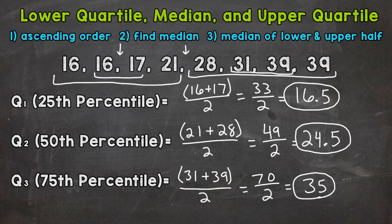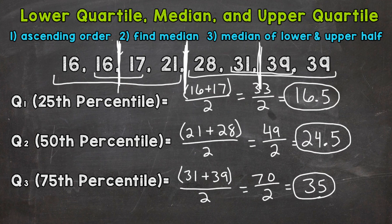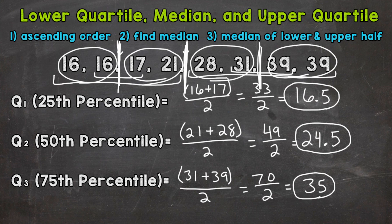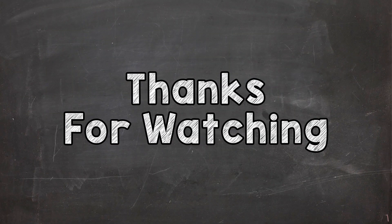Let's draw some lines to visualize where these quartiles are and how they break our data into four equal parts. 16 and a half is right in between 16 and 17. The median is right in between 21 and 28. And the upper quartile is in between 31 and 39. You can see we have one, two, three, and four equal pieces. This line represents the 25th percentile, this one the 50th, and this the 75th. That's how you find the lower quartile, the median, and the upper quartile. I hope that helped — thanks so much for watching!